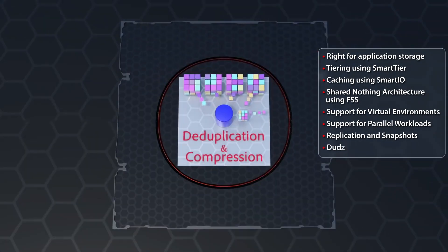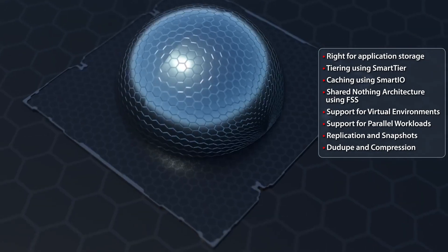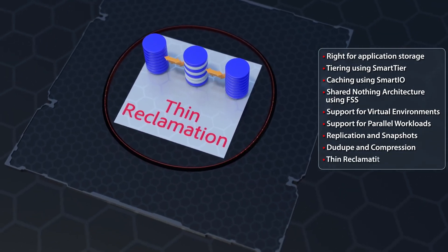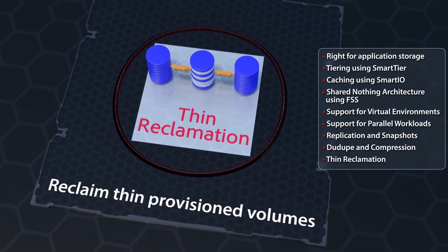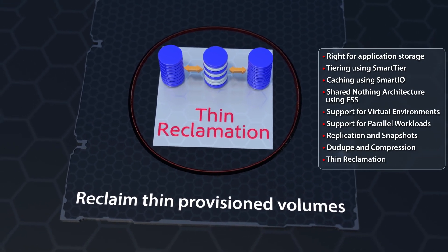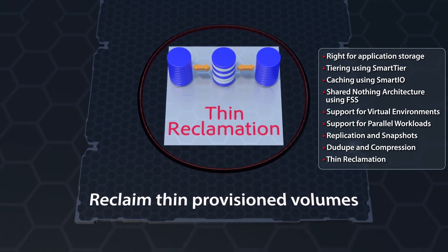Deduplication and compression, and thin reclamation, which helps reclaim thin provision volumes once they're available for reuse, thereby helping reduce storage spend.